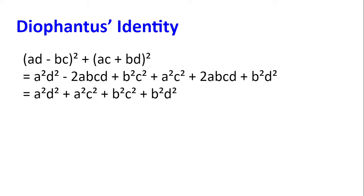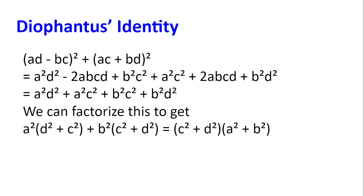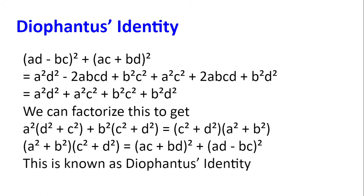Now we have two terms with a squared and two terms with b squared, so we can factorise to get a squared multiplied by (d squared plus c squared) plus b squared multiplied by (c squared plus d squared). Factorising once more gives (c squared plus d squared) multiplied by (a squared plus b squared). So in the end we get (a squared plus b squared)(c squared plus d squared) equals (ac plus bd) squared plus (ad minus bc) squared. This is known as Diophantus' identity.